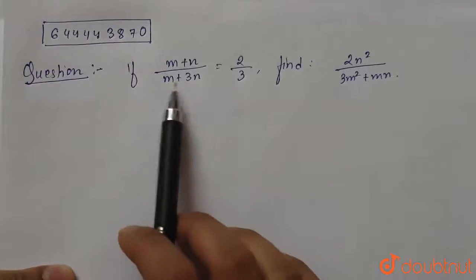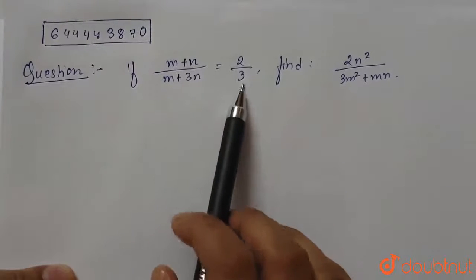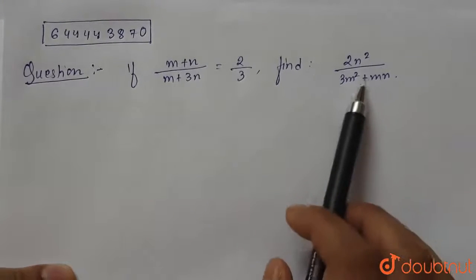If m plus n divided by m plus 3n equals 2 by 3, find 2n squared divided by 3m squared plus mn.